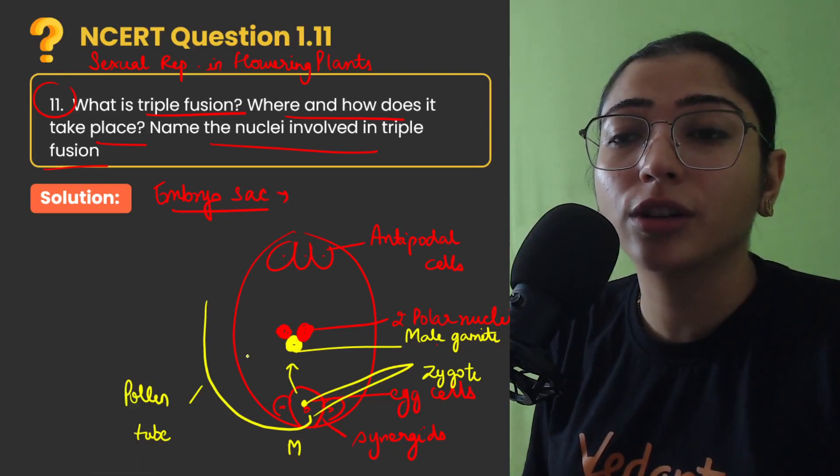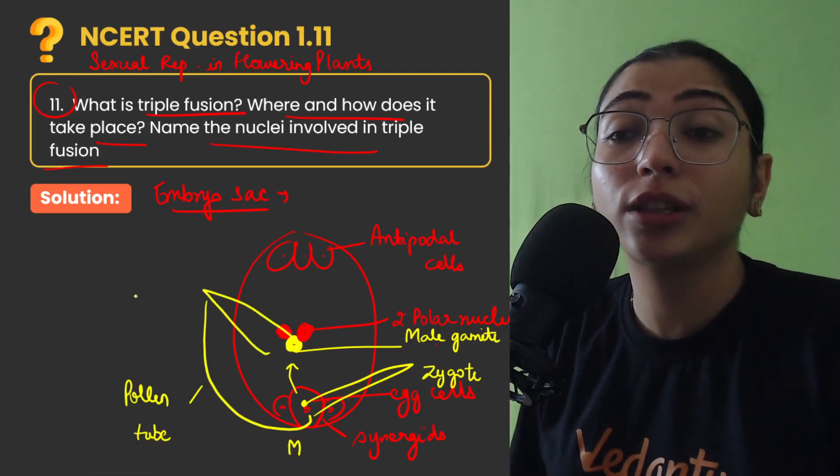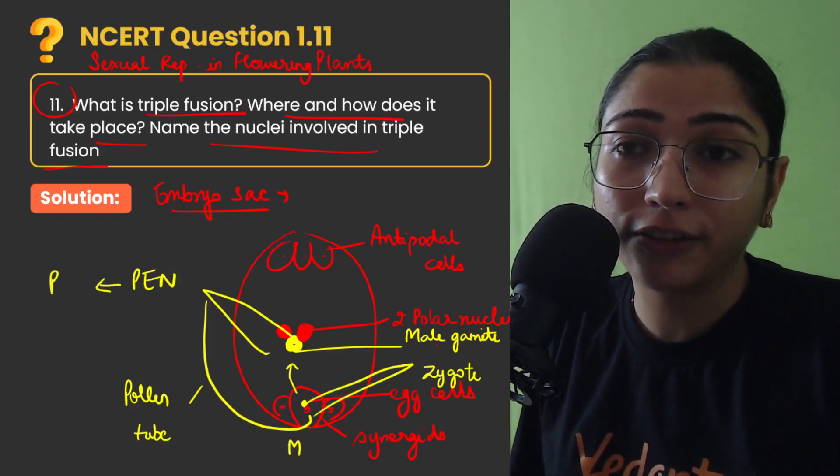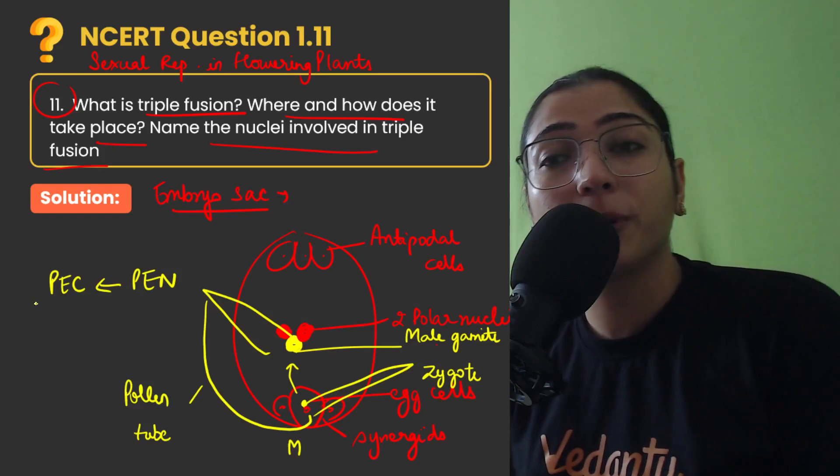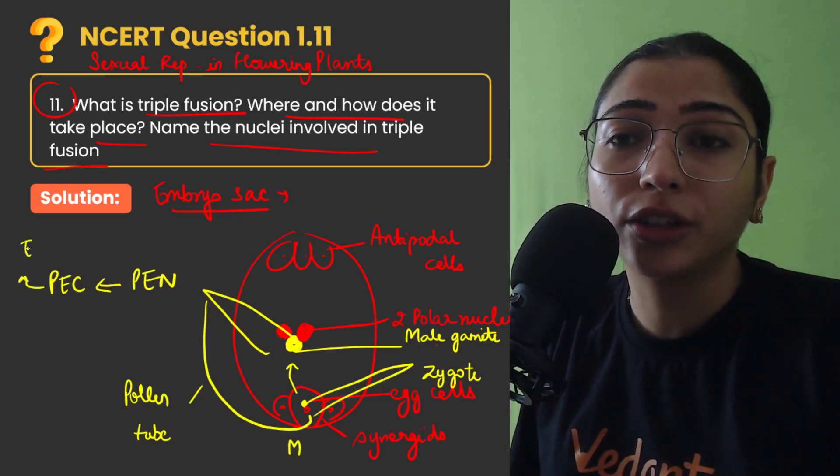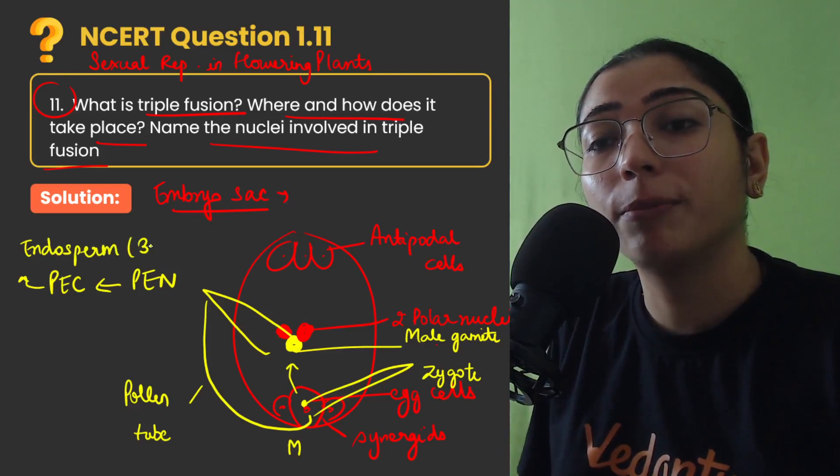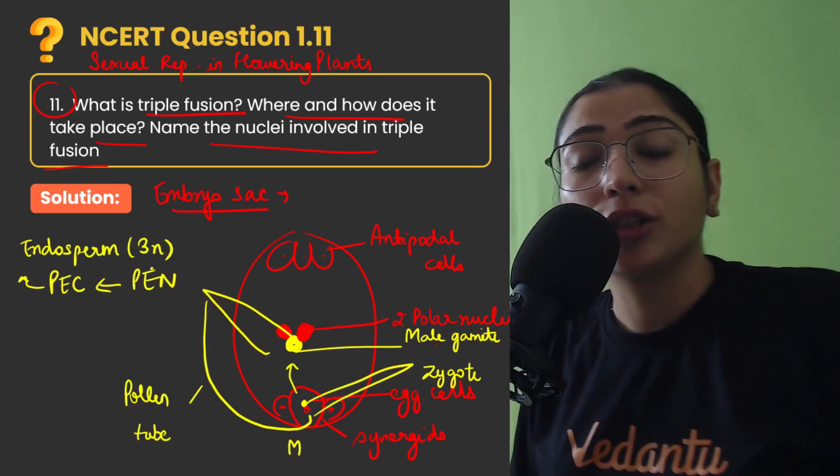These were 2 polar nuclei which fuse in the large central cell to give rise to a structure called, when these 3 nuclei will fuse, they will give rise to a structure called PEN, that is primary endosperm nucleus which further will develop into PEC, primary endosperm cell and ultimately a structure of triploid level will be formed, that is endosperm.